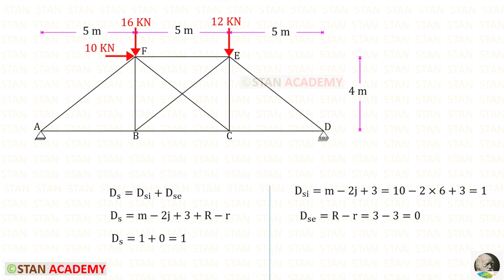We need to find the degree of static indeterminacy. This is the formula to find that. For DSi, here the members are 10 and the joints are 6. For DSi, we will get 1.